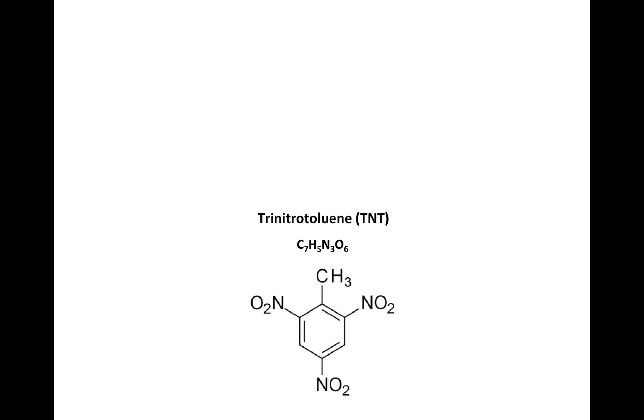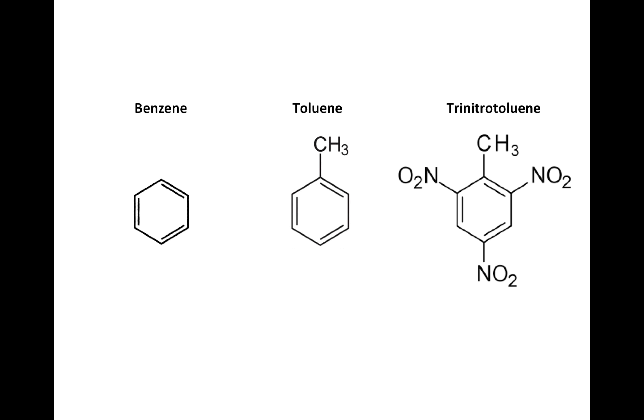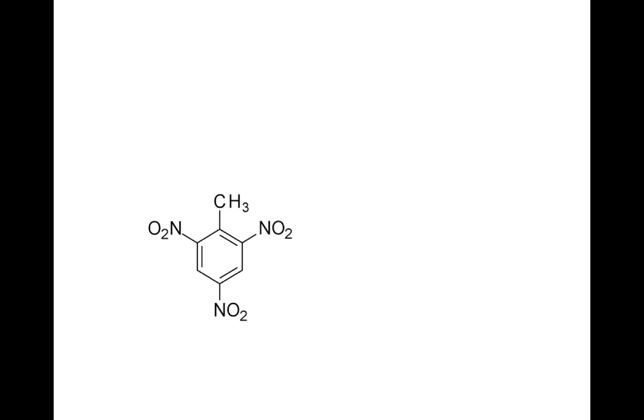Now this is trinitrotoluene or TNT and it has this molecular formula. TNT is a derivative of benzene. This is another way I can show the benzene ring. This is toluene and this would be trinitrotoluene. You see three nitro groups attached to the toluene molecule.